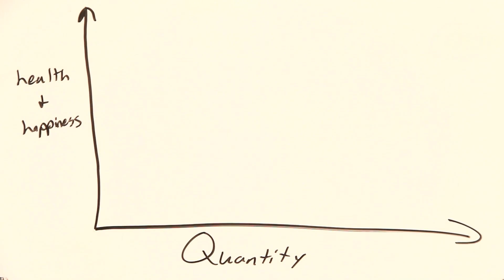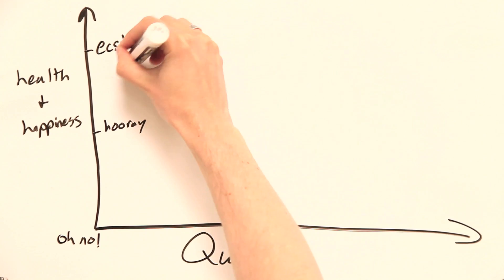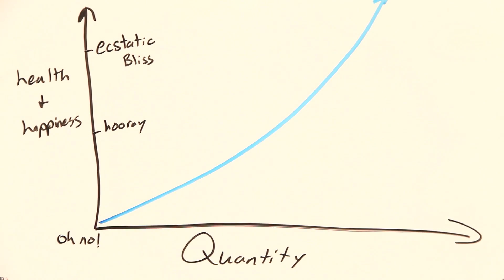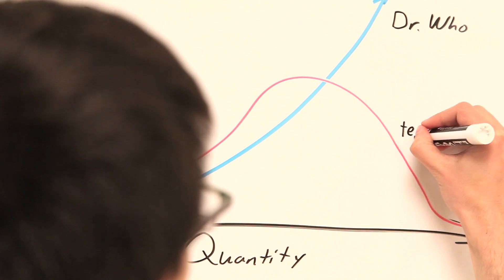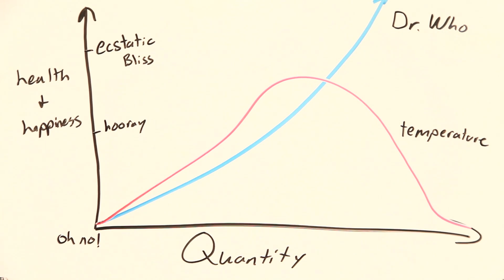Biology may best be described as the Goldilocks science, because unlike internet memes, Doctor Who episodes, and internet memes about Doctor Who, when it comes to biological systems, more is not always better.